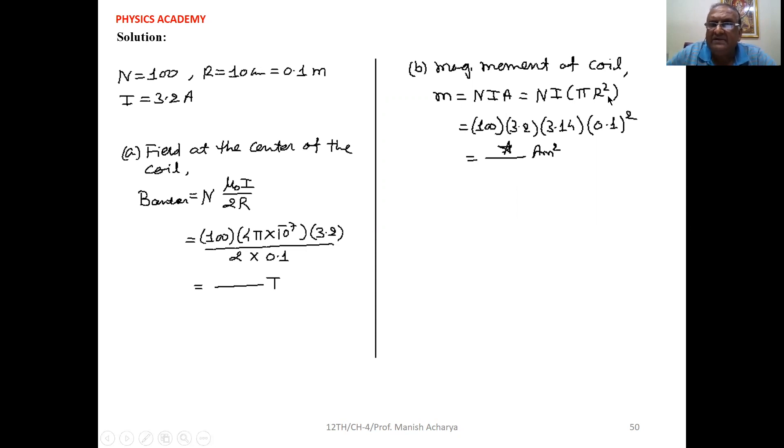Area is πR². So the equation for magnetic moment becomes M = NI × πR². N is 100, I is 3.2.